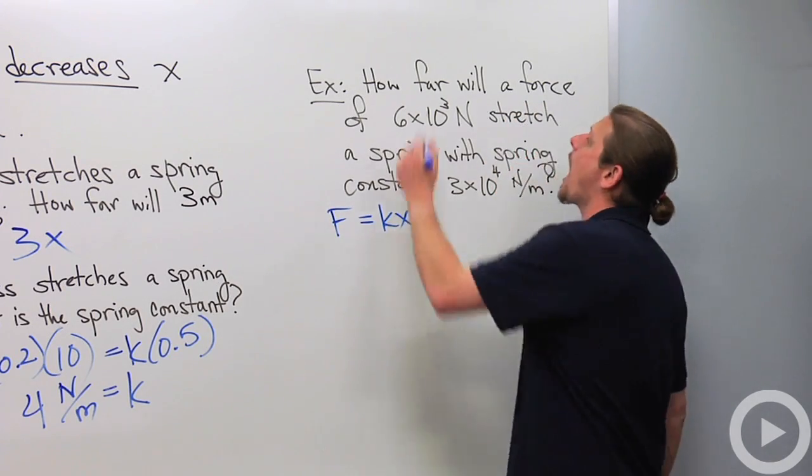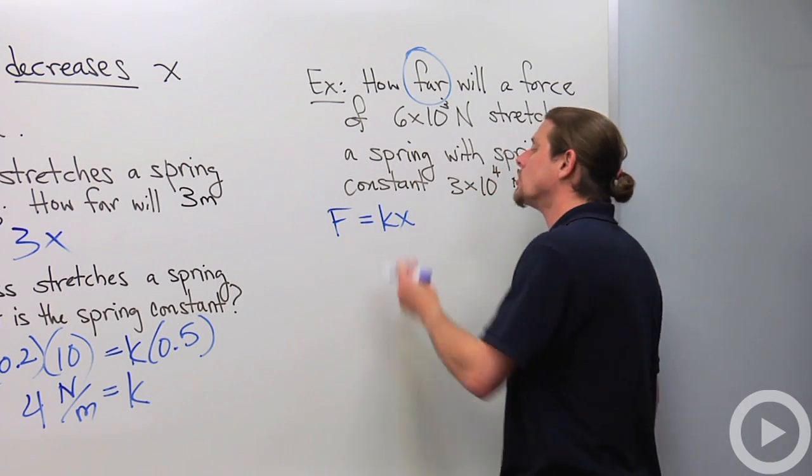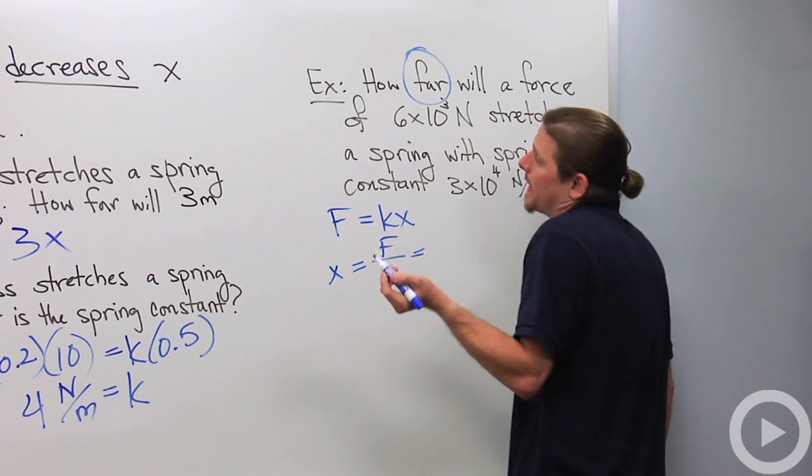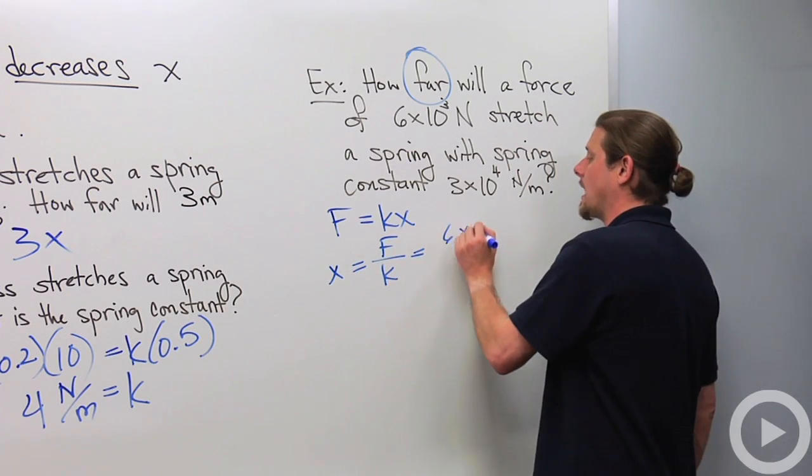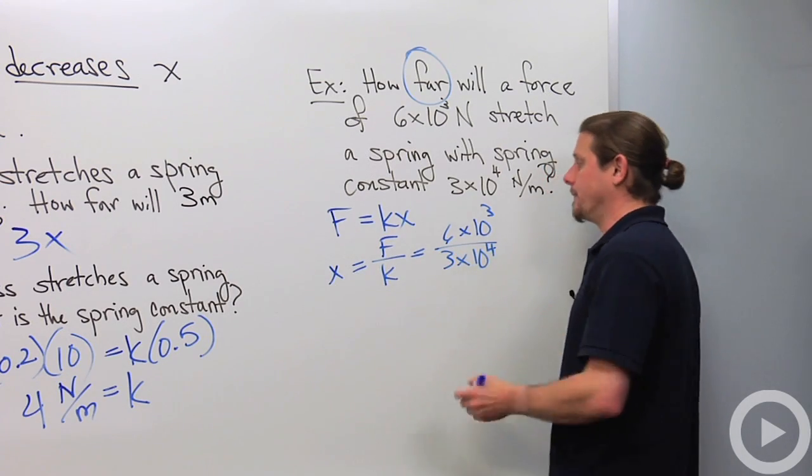Again, F equals KX. Now, here I want X. How far? So I'm going to solve for X. X equals F over K, and then I just plug in. So it'll be 6 times 10 to the 3 over 3 times 10 to the 4.